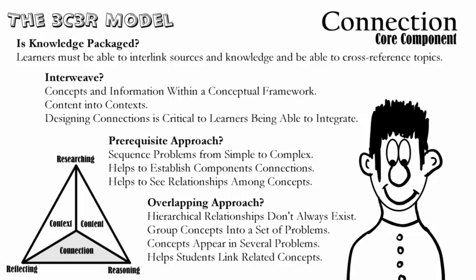The final C in the core components is connection. Hung tells us that learners must be able to interlink sources and knowledge and be able to cross-reference topics, and asks the problem designer to consider how knowledge is packaged. Hung asks the designer to consider how connections will be made between the knowledge and the problem. The model offers two approaches to achieving connection: a prerequisite approach or an overlapping approach. Each approach offers some advantages and some thoughts around the types of problems you may be working with and how to make connections.